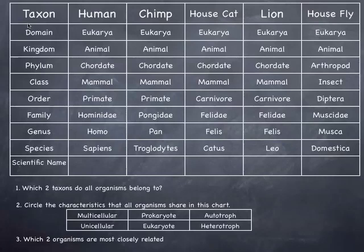I'm going to finish up talking about binomial nomenclature and classification a little bit. What I have here on this slide is the classification of five different organisms: human, chimp, house cat, lion, and a housefly. Those are all animals, and we already talked about humans a few times, their classification and where they belong.